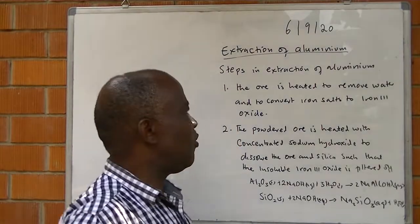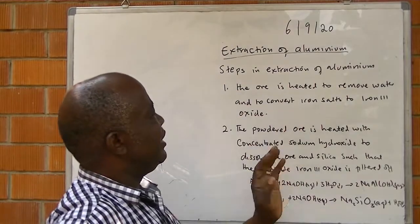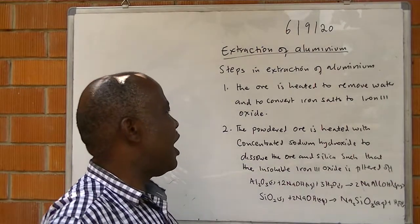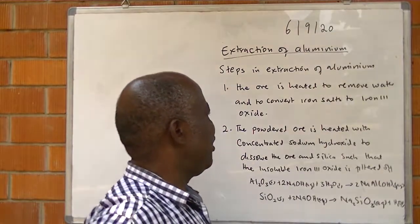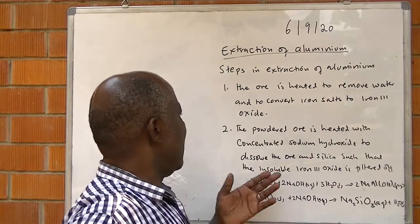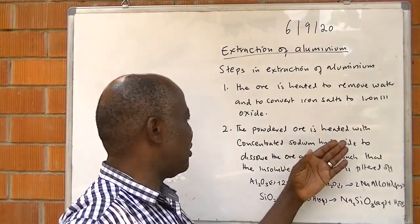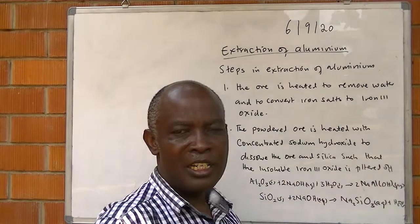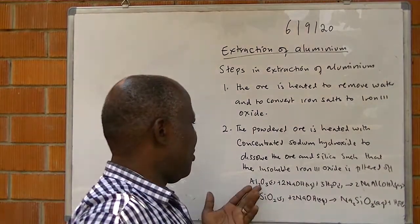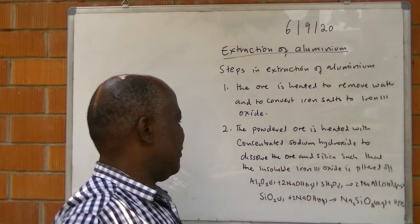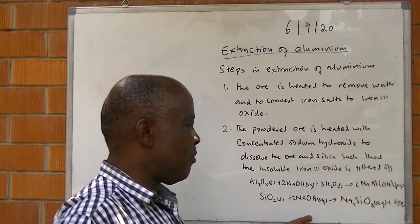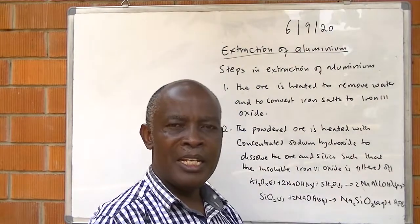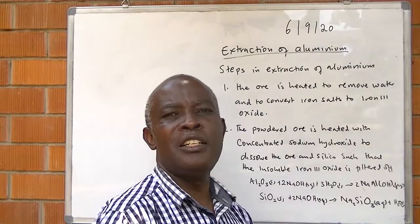Steps in extraction of Aluminium: the ore is heated to remove water, or to dry it, and also to convert any salts into iron(III) oxide. Then the powdered ore is heated with concentrated sodium hydroxide to dissolve the ore and silica, such that the insoluble iron(III) oxide is filtered off. Aluminium oxide reacts with sodium hydroxide to form sodium aluminate; silicon dioxide reacts with sodium hydroxide to form sodium silicate, both of which are soluble in water. The insoluble iron(III) oxide is then filtered off.